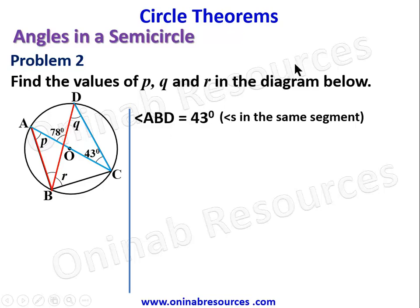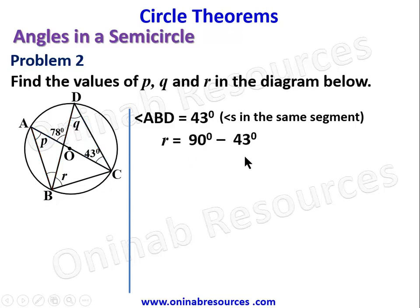This means angle ABD is equal to 43 degrees — angles in the same segment, from the previous theorem on circle geometry. Since angle ABC is 90 degrees, we have angle ABD plus R equals 90 degrees. Therefore R equals 90 minus 43 degrees, that's angles in a semicircle, giving R equals 47 degrees.